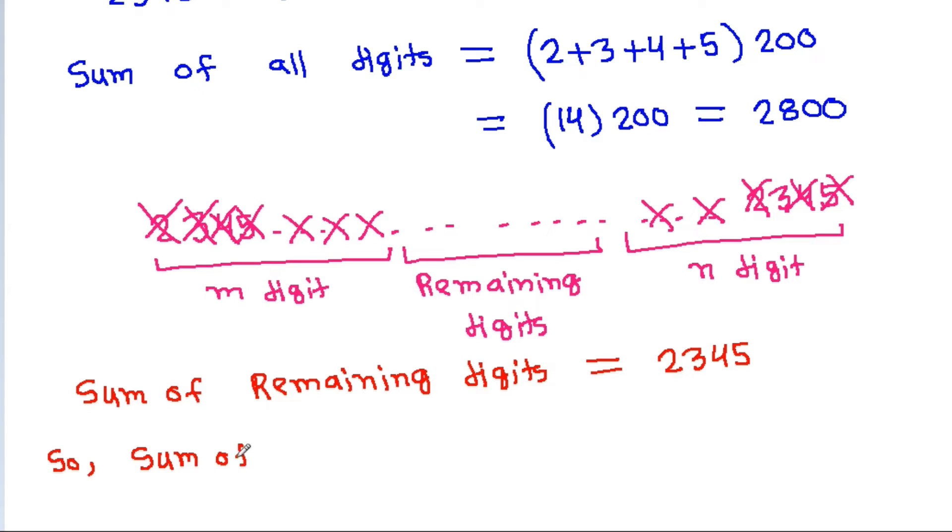So, sum of remaining digits is 2345. So sum of digits crossed out will be 2800 minus 2345, that is 455. And sum of 1 group of 2345 is 14.